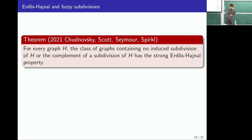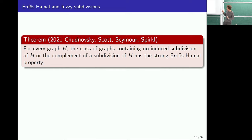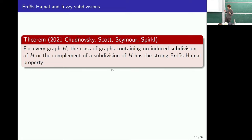We saw that if you have an odd subdivision of a graph, you can find that graph as a pivot minor. Closely related is the case of subdivisions of a graph — now replacing edges by paths of any length, not just odd. There's a nice result on the Erdős-Hajnal property: if you forbid induced subdivisions of some graph and the complements of these subdivisions, then you have the Strong EH property. This is encouraging for pivot minors, since odd subdivisions are close to this.